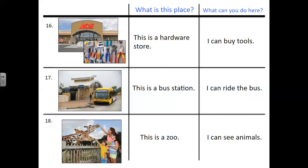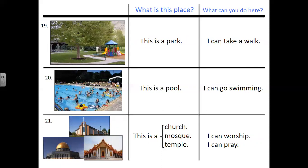Number seventeen. What is this place? This is a bus station. What can you do here? I can ride the bus. Number eighteen. What is this place? This is a zoo. What can you do here? I can see animals. Number nineteen. What is this place? This is a park. What can you do here? I can take a walk. Number twenty. What is this place? This is a pool. What can you do here? I can go swimming.